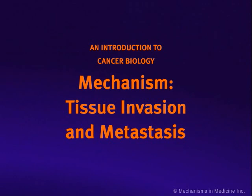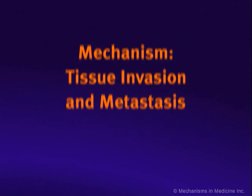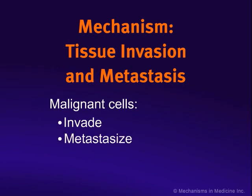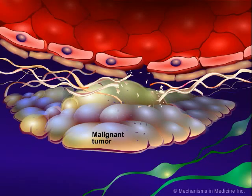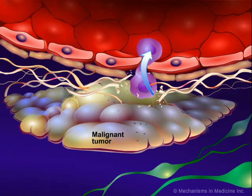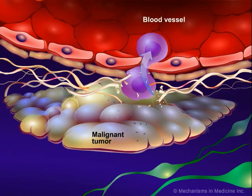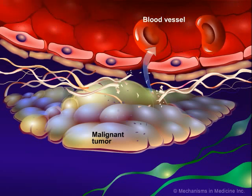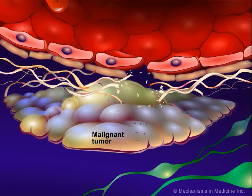Normal cells grow in a controlled manner to form tissues that form organs with specific functions. Malignant cells are defined by their ability to invade adjacent normal structures and be disseminated or metastasized. Malignant tumors can metastasize at any point. They do so by having cells break off from the main tumor, enter the bloodstream and or lymphatic channels, and travel to other parts of the body to initiate a new tumor.